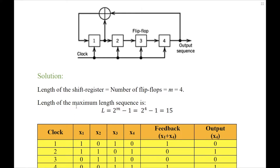Therefore, the length of the maximum length sequence that will be generated, represented here by L — you should note it is also represented as capital N in most textbooks — is given by 2 power m minus 1. In our case, m equals 4. Therefore, 2 power 4 minus 1 equals 15. This will be the length of the maximum length sequence or the PN sequence that will be generated.